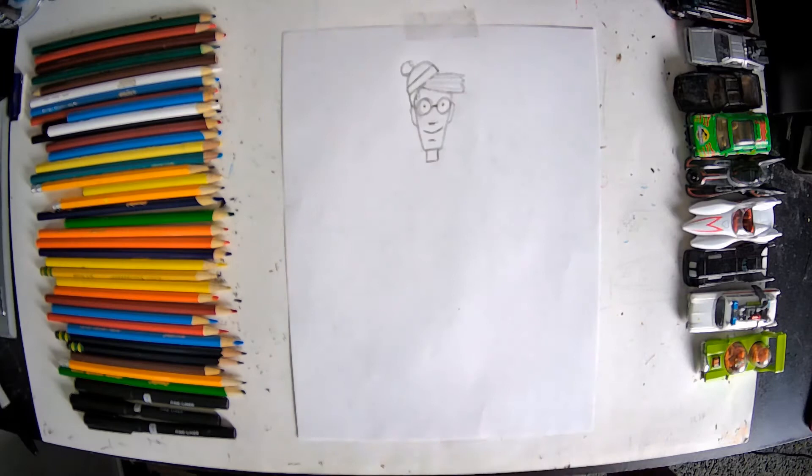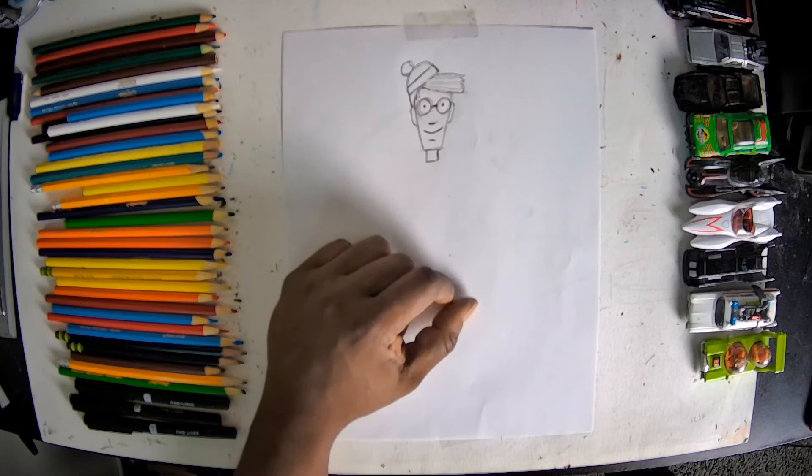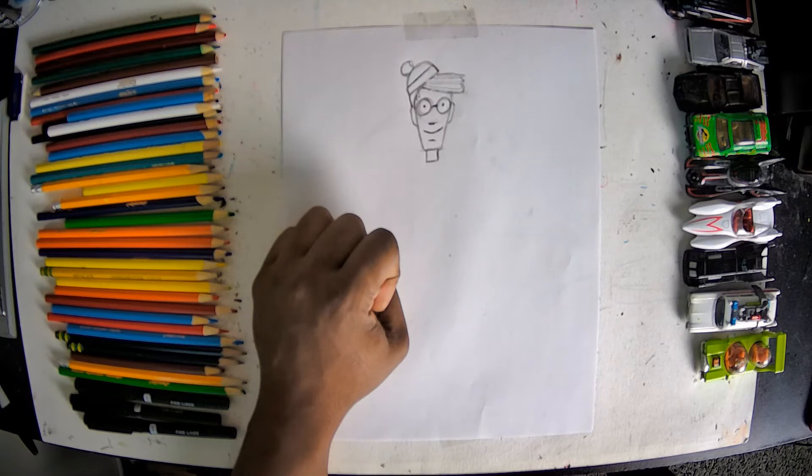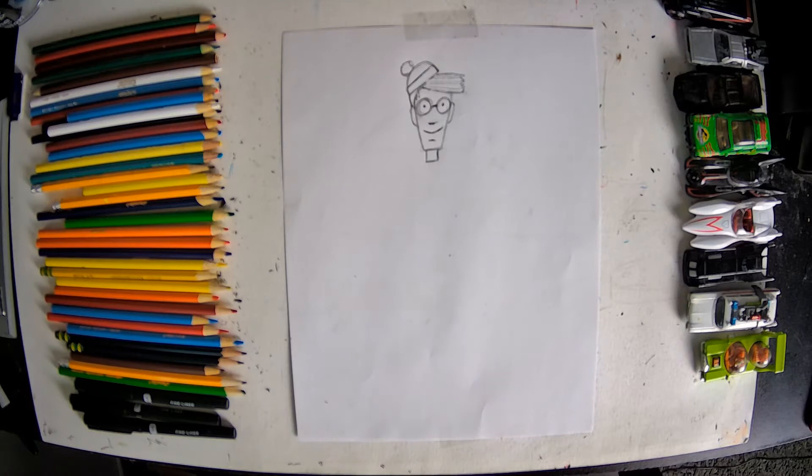Once we have our square shape, we are going to now work on making Waldo's body. We're gonna start by making the body, and then we'll add arms onto it, and then we'll make his legs. In order to make the middle of his body, we're gonna be making pretty much a long oval shape.